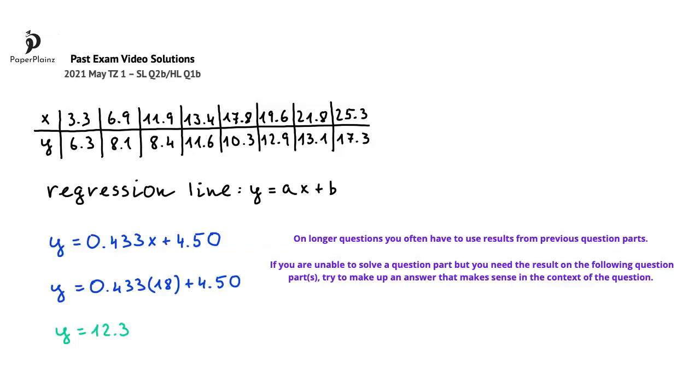Imagine that you were not able to find A and B in question part A. To solve question part B you need the value of A and the value of B. What you can do to earn at least one of the two marks on question part B is to make up a number for the value of A and another number for the value of B.